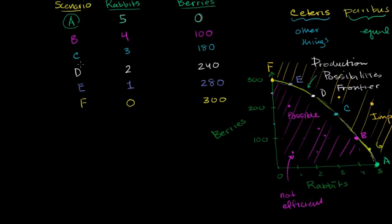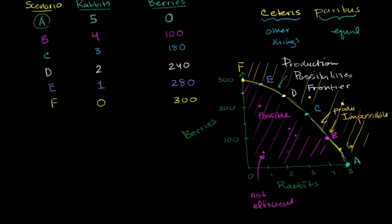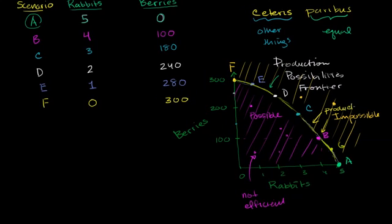We've already spent a lot of time thinking about these six different scenarios, all of which sit on the production possibilities frontier, which means that in any of these scenarios, we have achieved productive efficiency. And it's true not just of these scenarios — it's true of any of the points on this curve. So you have achieved productive efficiency at any point on that curve.